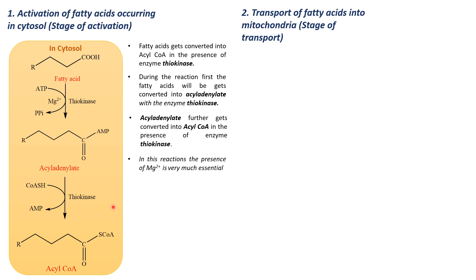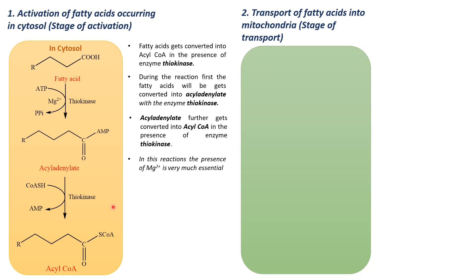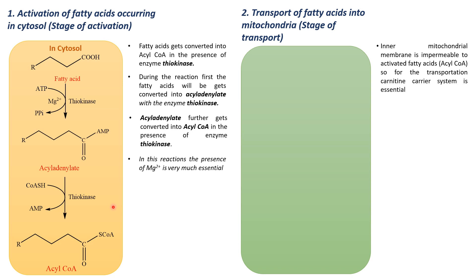Next, we move to the second stage — transportation of fatty acids into the mitochondria, also called the stage of transport. The inner mitochondrial membrane is impermeable to activated fatty acids, which are nothing but acyl coenzyme A. Therefore, for transportation, the carnitine carrier system is essential. Let us consider this box as the outer mitochondrial membrane, where we have acyl coenzyme A obtained from the cytosolic matrix.